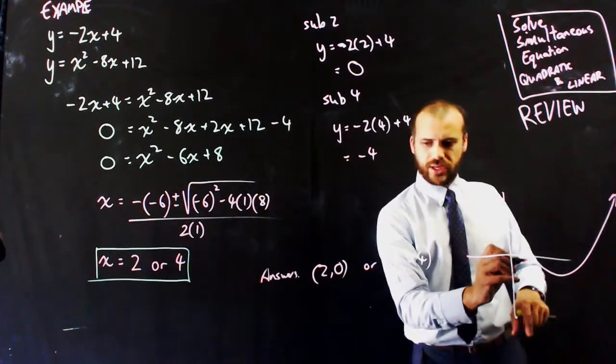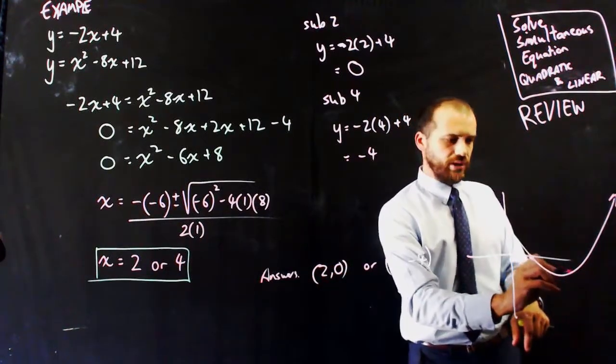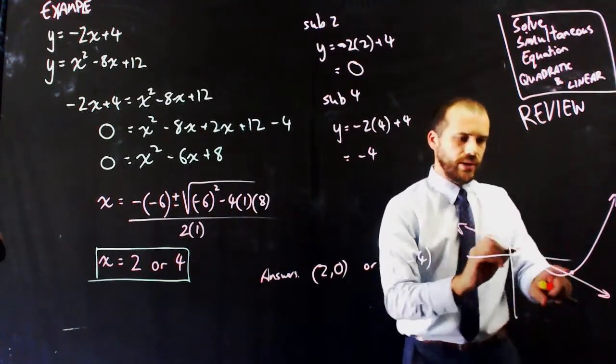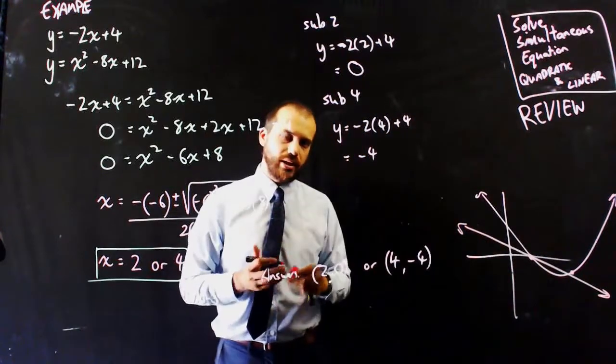Yeah, it passes through point (2, 0). So it's going to pass through there, and it's going to pass through (4, -4), which is probably like over here somewhere. Okay, and you can see this meeting at two points.